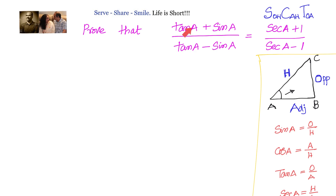Prove that tan(a) plus sin(a) divided by tan(a) minus sin(a) equals secant(a) plus 1 divided by secant(a) minus 1.